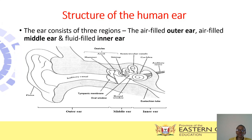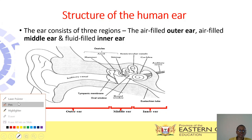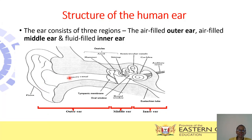Your ear consists of three regions: the outer ear, the middle ear, and the inner ear. The outer ear is filled with air. The middle ear is also filled with air, whereas the inner ear is filled with fluid.